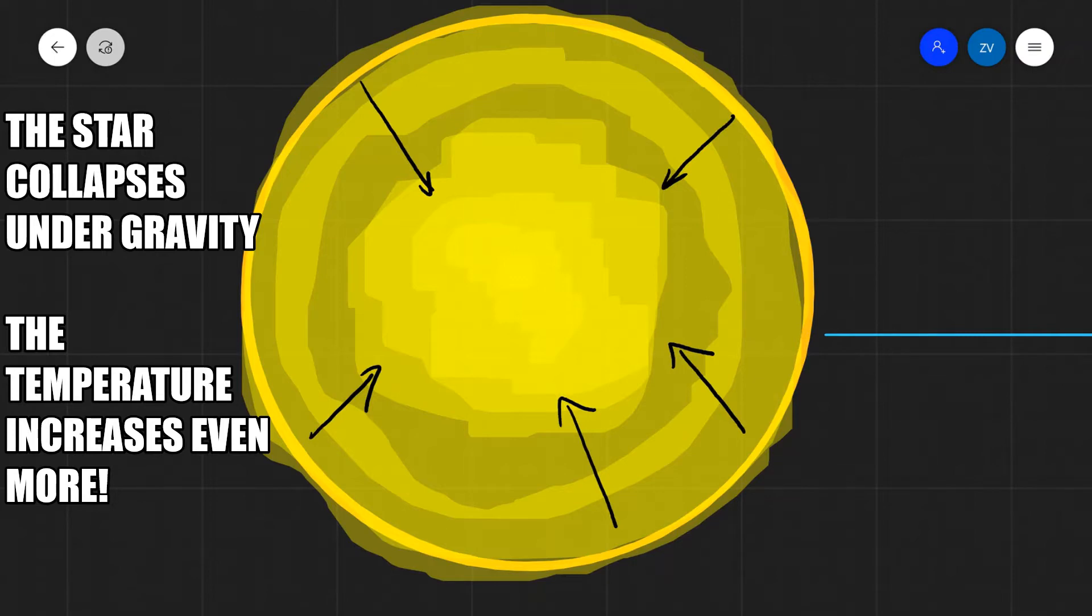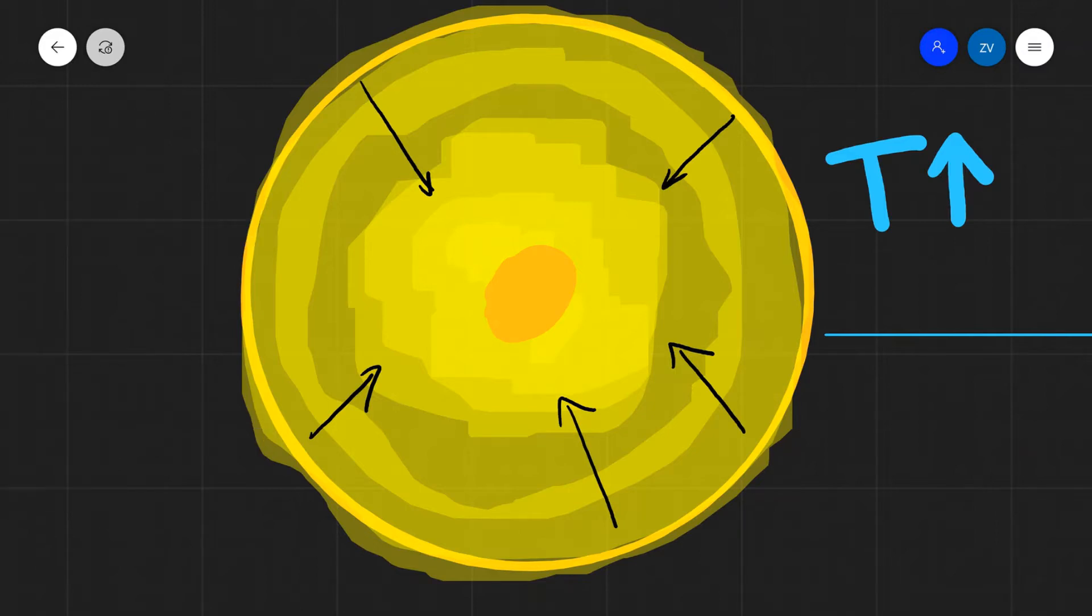During that collapse, more gravitational energy is being converted to kinetic energy and the temperature rises even further. The temperature increases and can reach up to 10^8 or even 10^9 Kelvin. The core turns into a superheated state, and during that superheated state we can actually fuse helium into heavier elements.